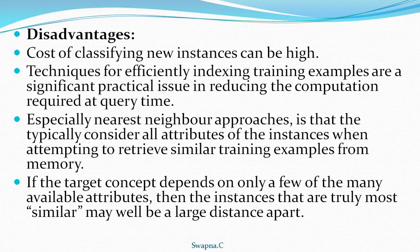Another disadvantage: whenever the neighboring technique is used to classify the new instance, it generally considers all the attributes of the instances to retrieve similar training examples. But this is not efficient because all attributes are not important — some attributes are irrelevant to classifying the new instance.